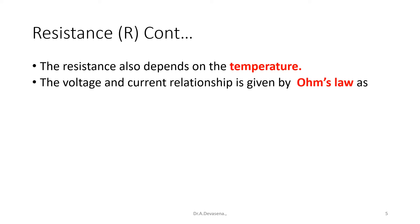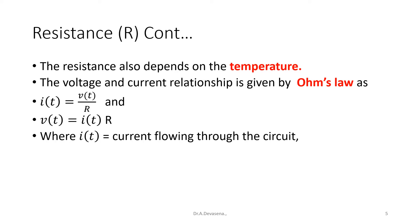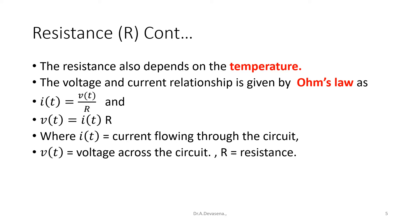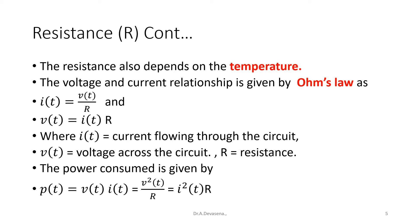The voltage and current relationship is given by Ohm's law as I of t is equal to V of t by R, and V of t is equal to I of t into R, where I of t is the current flowing through the circuit and V of t is the voltage across the circuit. The power consumed is given by P of t is equal to V of t into I of t, that is nothing but V square of t by R, that is equal to I square of t into R.